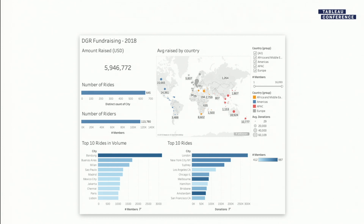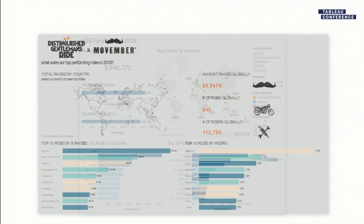The dashboard he created was great - it answered all of his business questions. He was able to see quickly where they raised the most funds, in which cities and countries around the world, and where they had the biggest races versus which cities raised the most money. When I look at this dashboard though, the first thing I ask myself is: what is the identity of this dashboard? So I took the same dashboard that Gaz had made and gave it a little bit of a makeover, and this is what we're going to use in today's session.